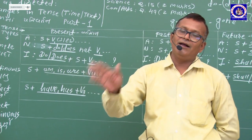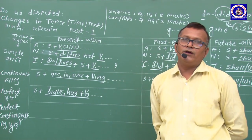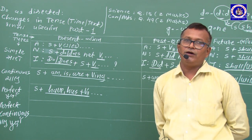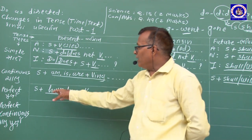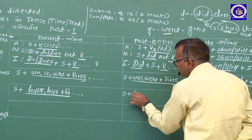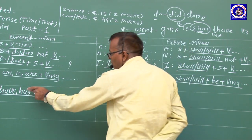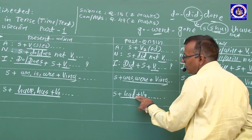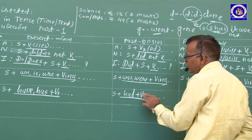Present Perfect: ક્રિયા ભૂતકાળમાં ક્યારે થઈ એ ચોક્કસ ન હોય, પૂરી થઈ ગઈ છે. Negative: Subject + has/have + not + V3. Interrogative: Has/Have + Subject + V3 + ? ઉ = 'I have done my work.' → Negative: 'I have not done my work.' → Interrogative: 'Have I done my work?'